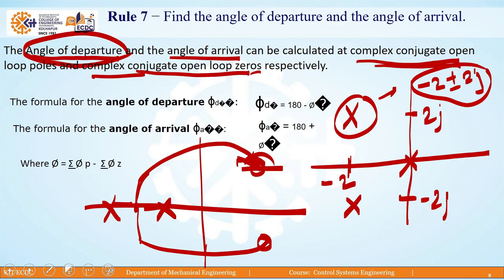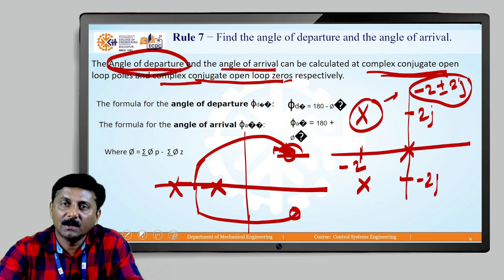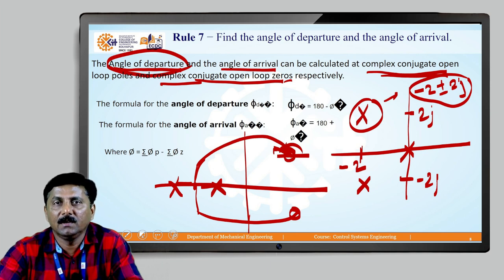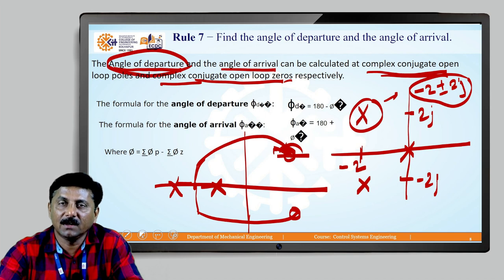These are the rules to be taken into consideration in order to draw the root locus for a particular system. In the next lecture we will proceed with a specific example and apply all these steps one by one to configure the root locus branches, and then define system stability, instability, and marginal stability. Thank you.